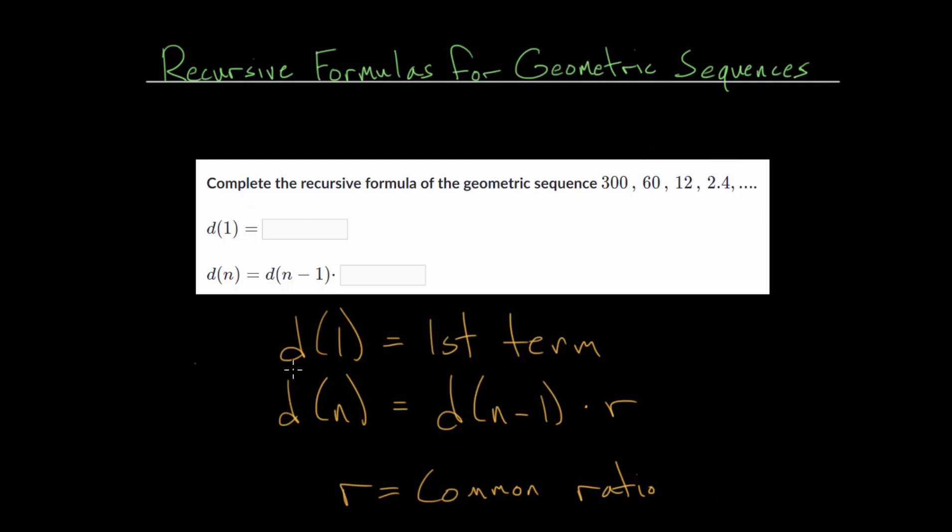So if we look at this specific problem, we need to complete the recursive formula of this geometric sequence here. And the majority of the work is going to be figuring out that common ratio. So we know our first term, that is 300, so we can put that into our box here.